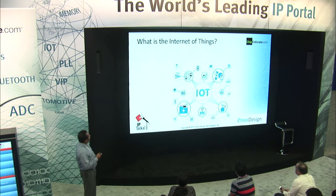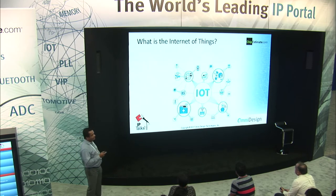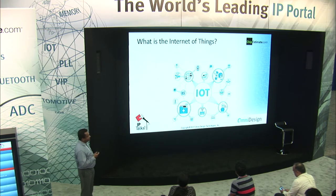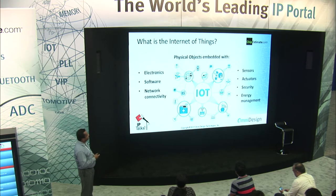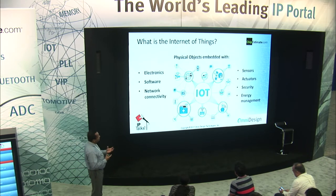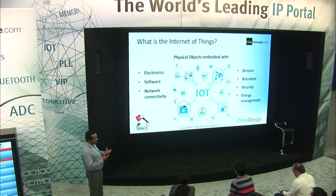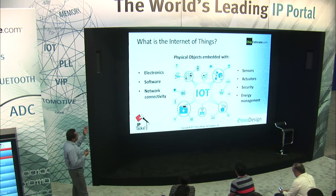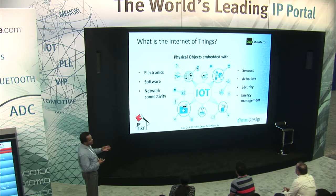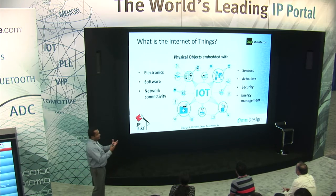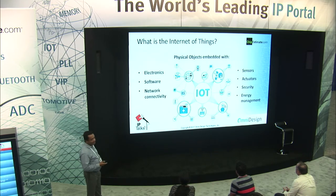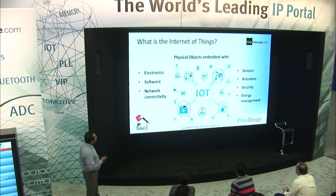What is the Internet of Things? It's not one thing — it's many different things. There are certain common elements: a physical object embedded with electronics, software, and some network connectivity, sensors to interface to the real world, actuators to take action, security components, and energy management.